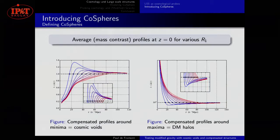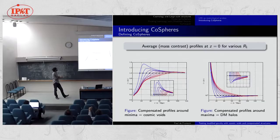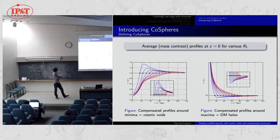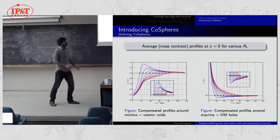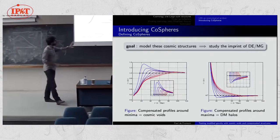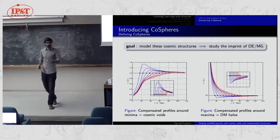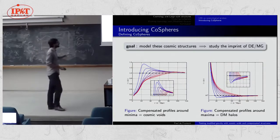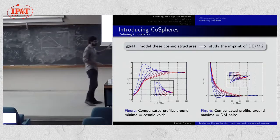Here are the profiles obtained in numerical simulations at redshift zero — the mass contrast profiles. You can see different compensation radii ranging from almost 15 to 80 megaparsecs, though much higher values are also possible. Profiles centered on local minima describe cosmic voids; those centered on local maxima describe dark matter halos. The goal is to model these spherical structures and study the impact of dark energy and modified gravity on these particular regions.